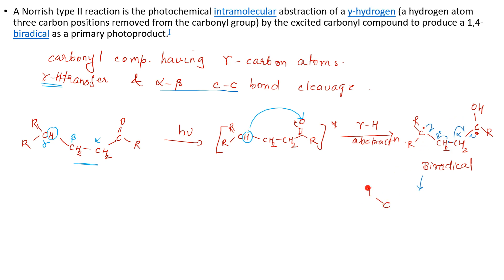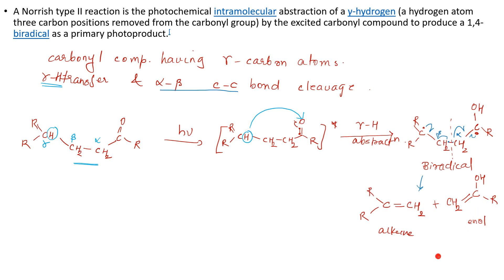The products are: first, R-C=CH2, which is an alkene. The other product is CH2=C(OH)-R, which is the enol form - it can undergo keto-enol tautomerism. So what you get is a ketone (or aldehyde, depending on the original structure). The large molecule breaks into an alkene and a smaller carbonyl compound.